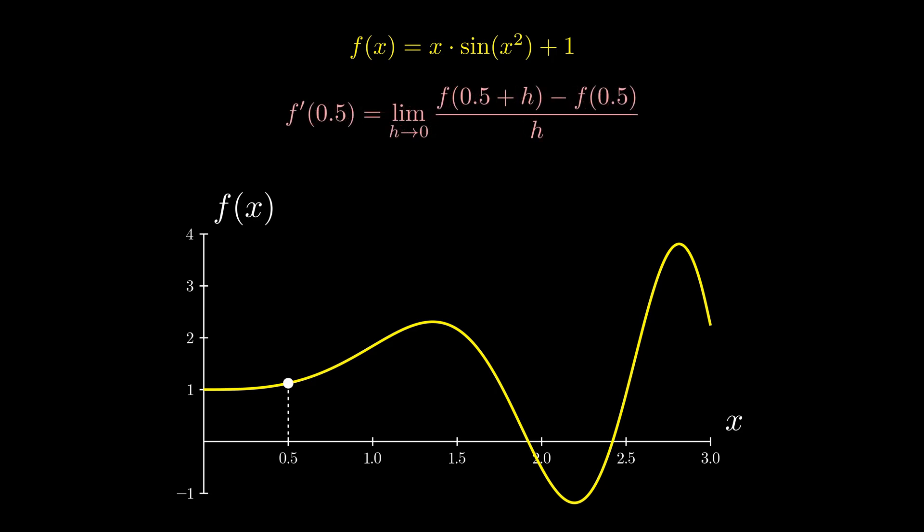The very first thing we need is a location x where the derivative is desired. For example, x equals 0.5. Then selecting some h value and plugging that into the formula gives the slope of the line connecting two dots. This slope approximates the derivative of the function but it won't be accurate if h is too large.